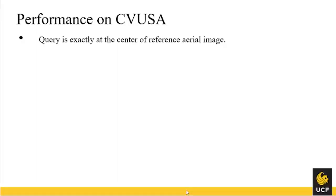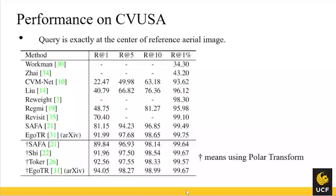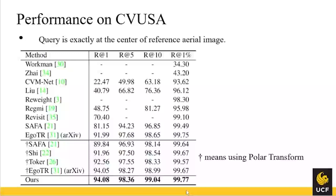We also evaluate on the perfectly aligned scenario. On CVUSA, the query is perfectly aligned at the center of the aerial view image. In this case, polar transform-based methods also work very well, achieving over 90%. But our method is still able to achieve better performance in this scenario.